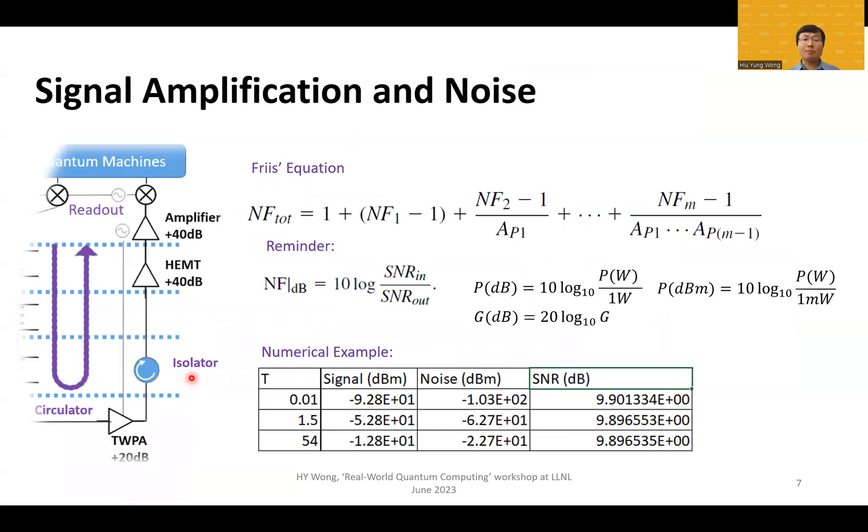Let's look at the signal amplification train first. You see that there are three amplifiers: TWPA, which is traveling wave parametric amplifier; HEMT, high electron mobility amplifier at above 4 Kelvin; and then room temperature amplifier. Why do we need all these amplifiers? Of course, we want to have a large gain. But there's some special reason to arrange them in this way. We need to have the lowest noise figure in the first amplifier.